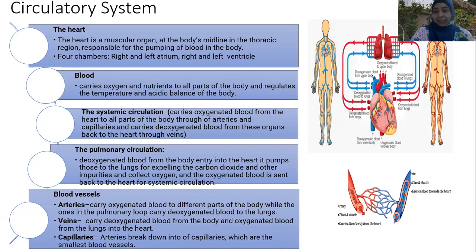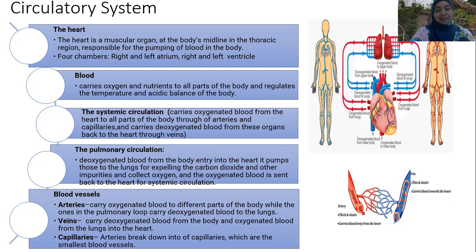The systemic circulation carries oxygenated blood from the heart to all parts of the body through arteries and capillaries, and carries deoxygenated blood from the organs back to the heart through veins. Oxygen is carried from the pulmonary system when the blood is fully filled with oxygen.